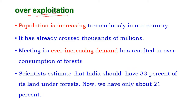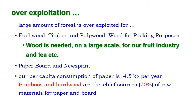Now let us see the over-exploitation of forests. The population is increasing tremendously in our country — this is a major problem threatening the existence of forests. Meeting its ever-increasing demand has resulted in over-consumption of forest resources. Scientists estimate that India should have 33 percent of land under forest cover, but now we have only about 21 percent.